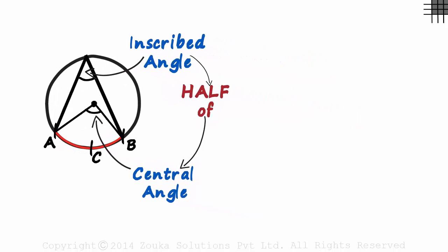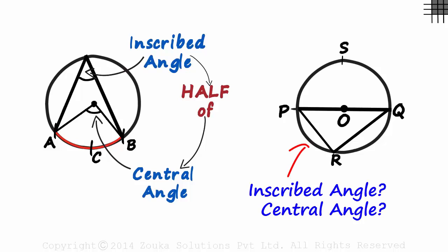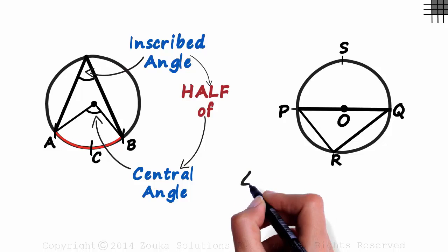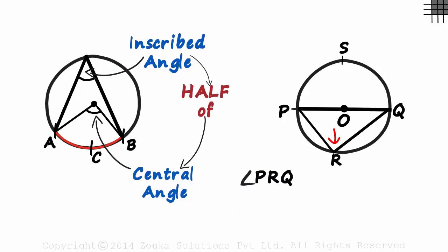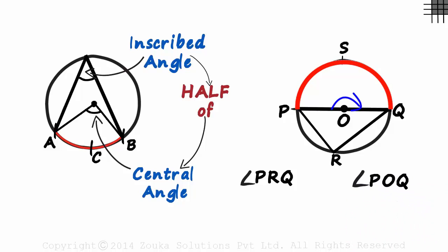Let's look at a special case. Look at this figure and identify the inscribed and central angles, assuming PQ is a line segment passing through the center. Angle PRQ is the inscribed angle, as its vertex lies on the circumference, and the arc it subtends is arc PSQ. The central angle of arc PSQ is angle POQ, which, though it looks like a straight line, is still an angle.